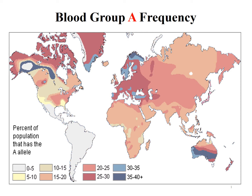We will continue to look at the different blood groups and their distribution. Blood group A is more common in North America, namely Canada, the Scandinavian countries, and Australia, with a percentage of about 35 to 40%. Whereas in South America, blood type A is very rare, at about 0 to 5%.